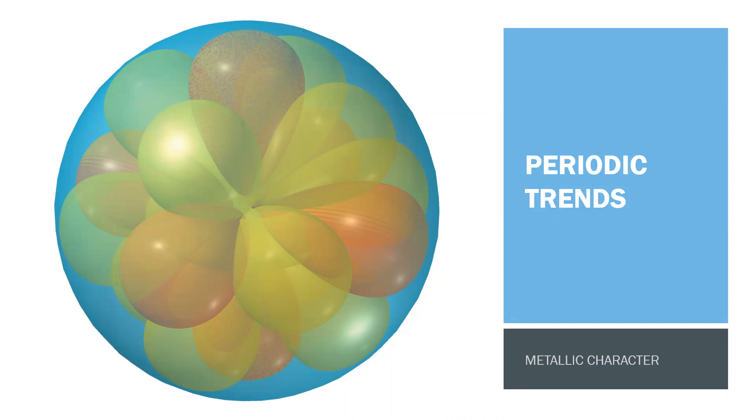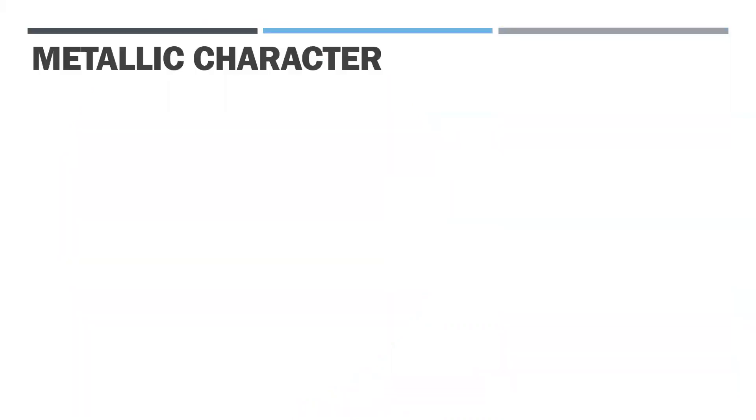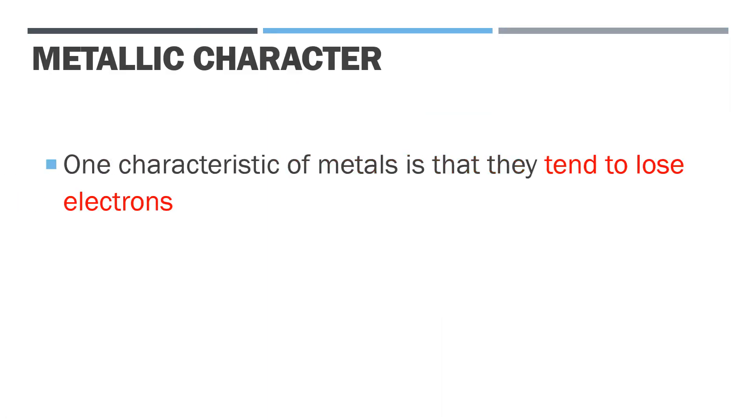Hey students, the third periodic trend we're going to talk about is metallic character. So what is meant by metallic character? One of the things we have to remember is that metals like to lose electrons - that's why they form positively charged cations.